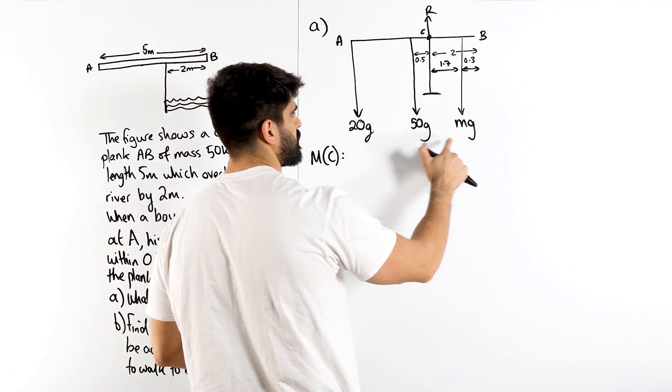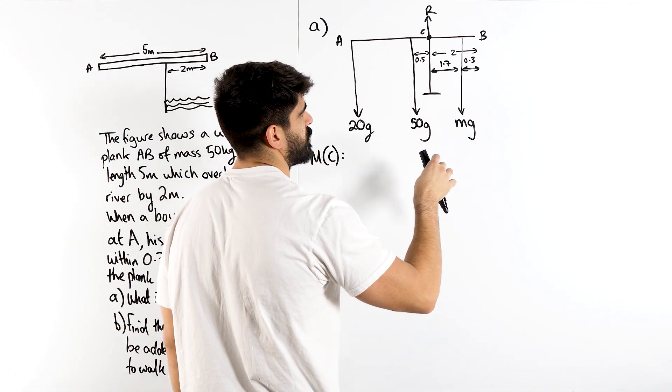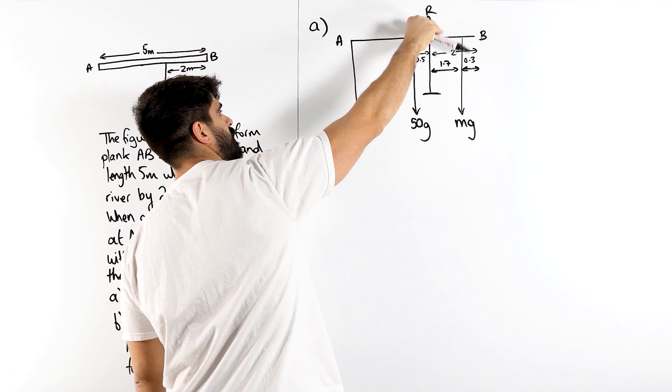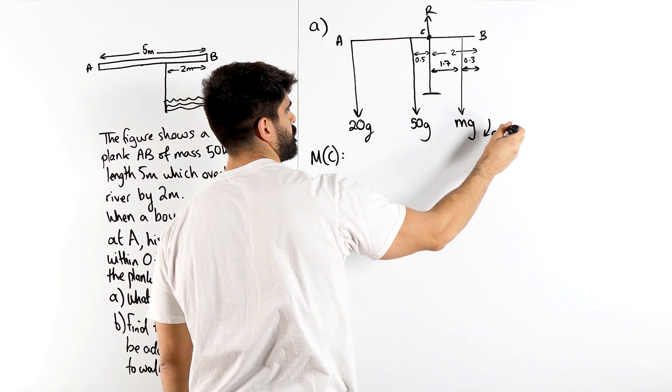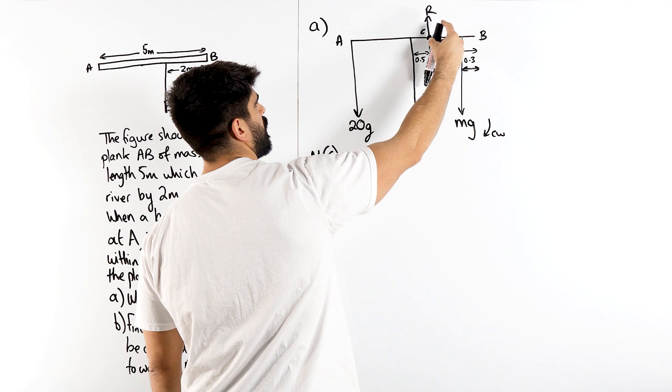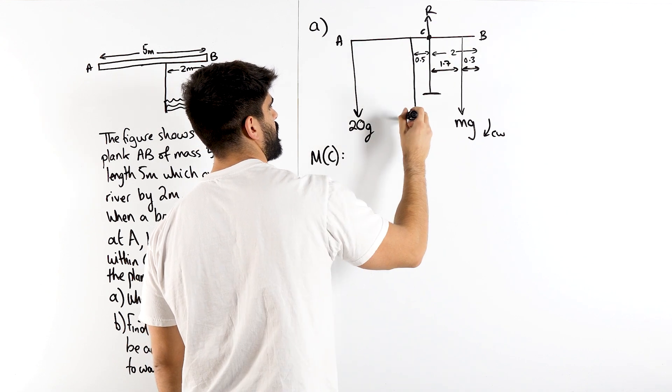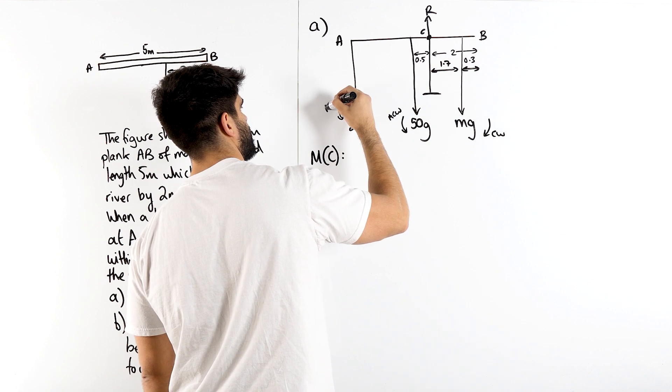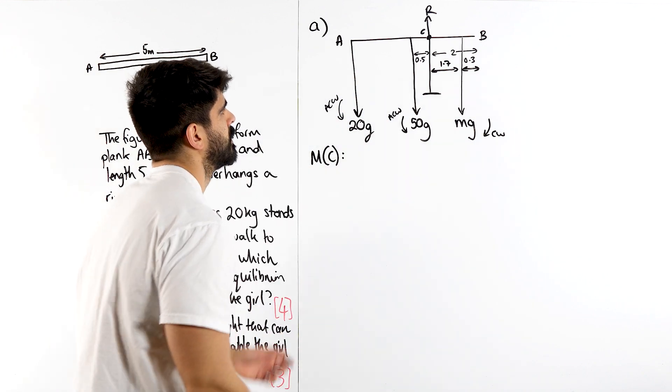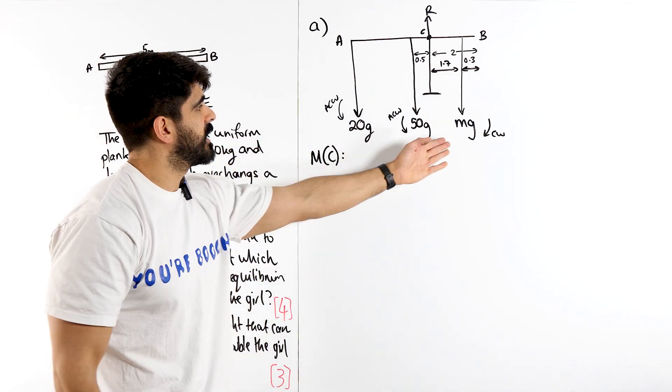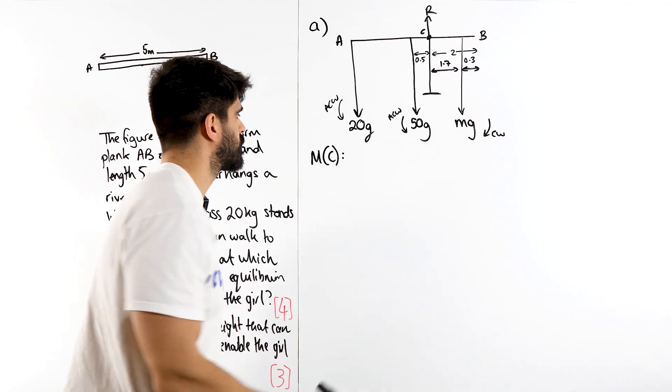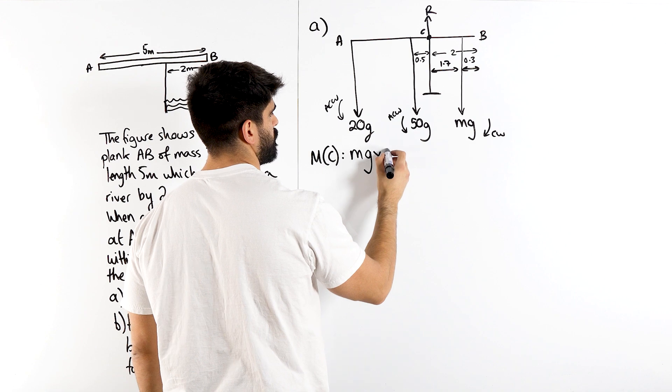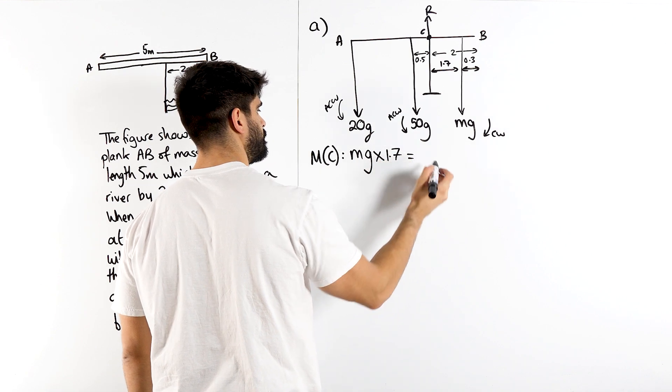We have to decide which one's clockwise, which one's anticlockwise. Now MG, if we put our pen along here, is pointing down, so I say clockwise. And these two are both anticlockwise. So that's going down that way, anticlockwise. And this one is also anticlockwise. So we're trying to find MG, let's do that one first. So it's force times perpendicular distance, which is 1.7, equals...